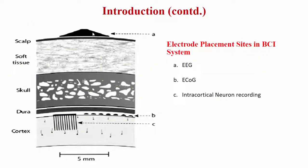This slide explains the placement of electrodes in EEG — electroencephalography — where electrodes are placed on the scalp and it is non-invasive. Electrocorticography, placed under the dura mater, is invasive. Intracortical neuron recording is placed under the dura mater or into the brain tissue, and electrodes are placed there.